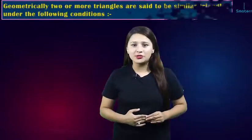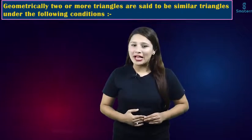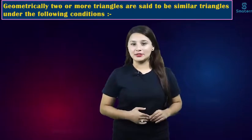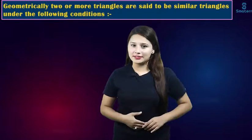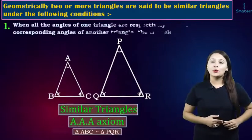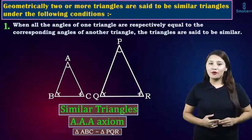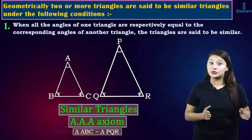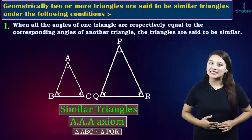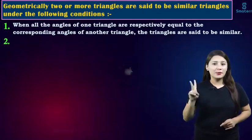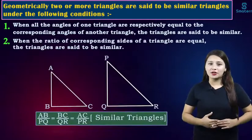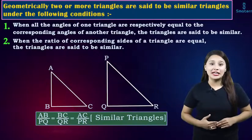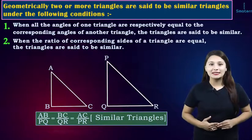Geometrically, two or more triangles are said to be similar triangles under the following conditions. Number one: when all the angles of one triangle are respectively equal to the corresponding angles of another triangle, the triangles are said to be similar. Number two: when the ratio of corresponding sides of a triangle are equal, the triangles are said to be similar.